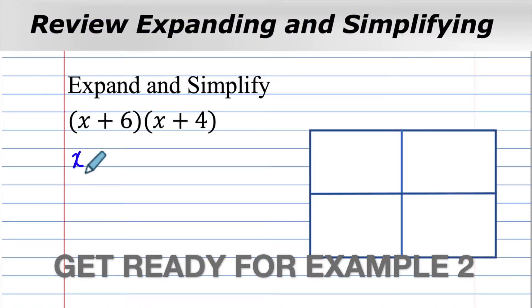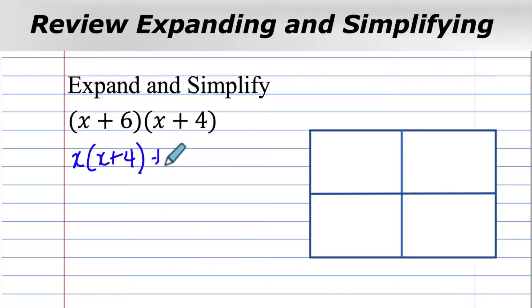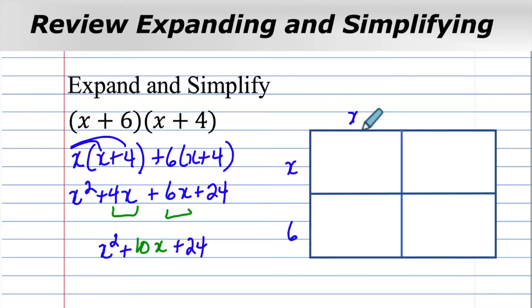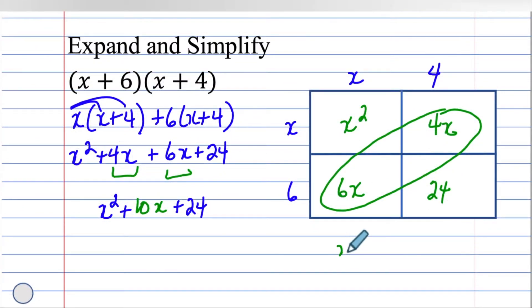Here we have x times x plus 4 plus 6 times x plus 4. Distribute. We've got x squared plus 4x plus 6x plus 24. Collect the like terms. We've got 10x plus 24 and x squared. The x plus 6 and x plus 4 resulted in x squared, 4x, 6x, 24. These two add up to 10x. We have x squared plus 10x plus 24 as the resulting trinomial.